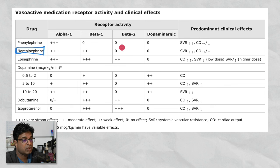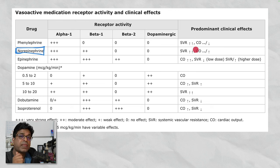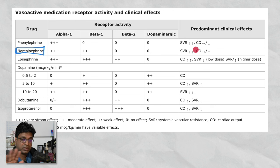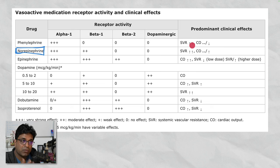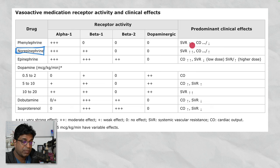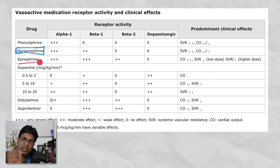Because of the reflex blood pressure rise causing bradycardia, the beta-1 effect gets offset, so what remains is that cardiac output stays low or slightly increases but the major effect is increased systemic vascular resistance. Therefore, noradrenaline is very good in distributive shock such as septic shock and anaphylaxis. It is the agent of choice in septic shock. Then we have epinephrine, which has all sorts of effects except dopaminergic. It has good alpha-1, good beta-1, and good beta-2 activity.